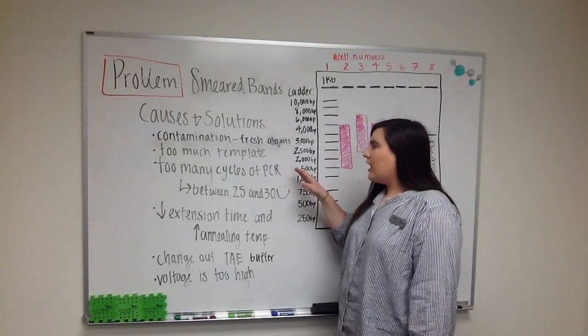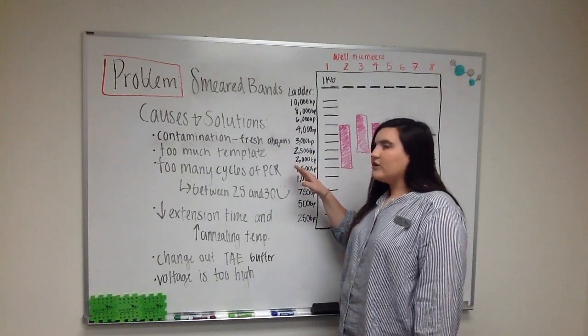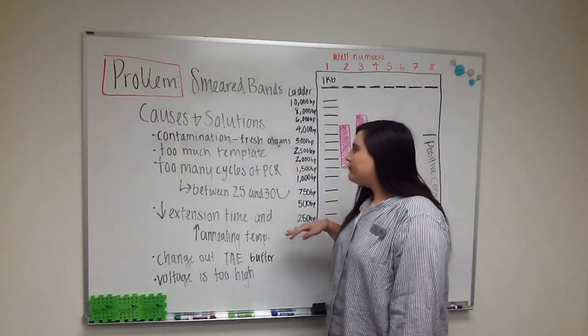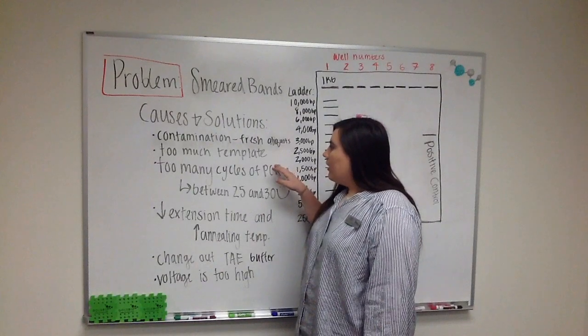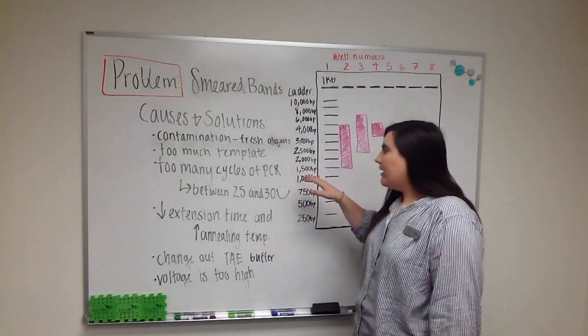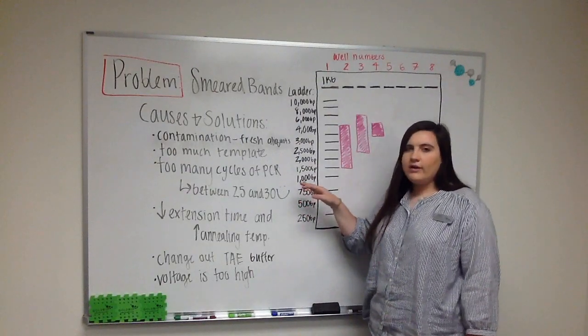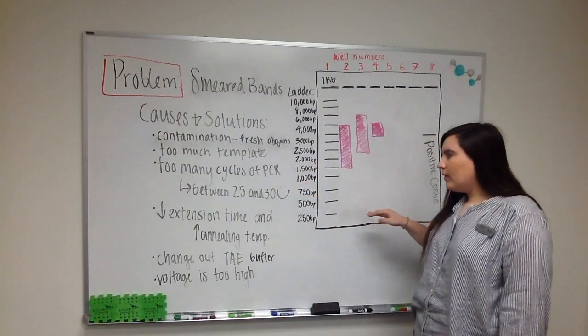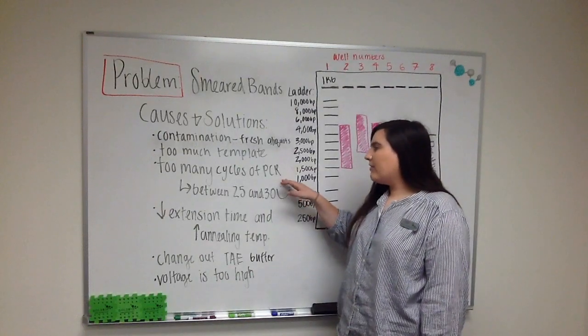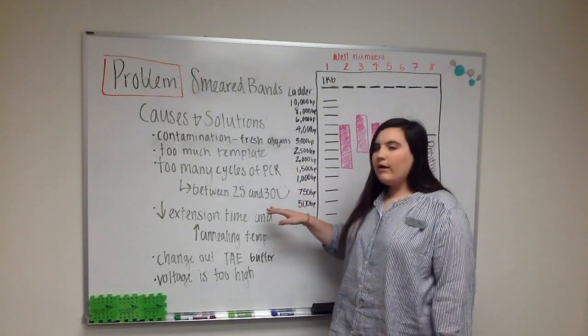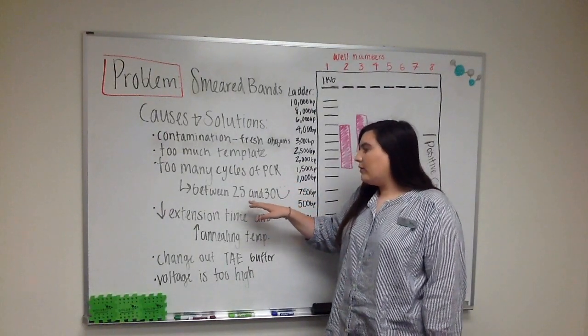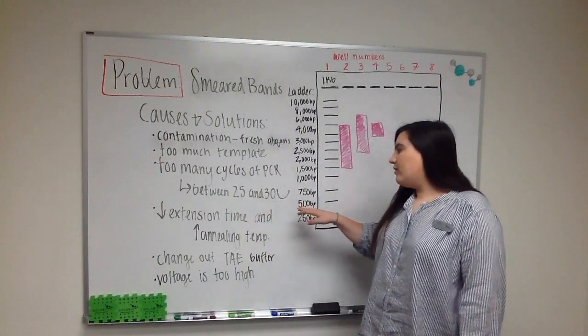I would recommend using fresh aliquots and using those fresh aliquots to run a new PCR. You can also have too much template DNA so I would recommend reducing that or any DNA overloading in general might give you this smearing effect. You can also run too many cycles of PCR. I would recommend trying to stick with between 25 and 30 cycles.